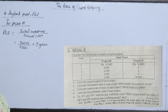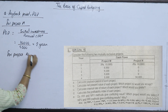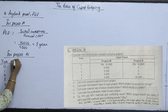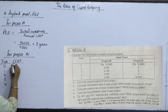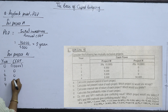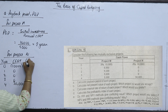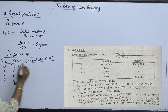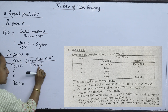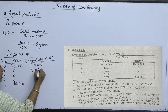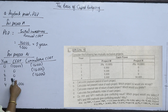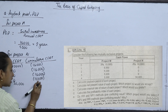For Project N, this is an uneven cash flow. We set up a table with Year, CFAT, and Cumulative columns. The initial cumulative value is minus 10,000.